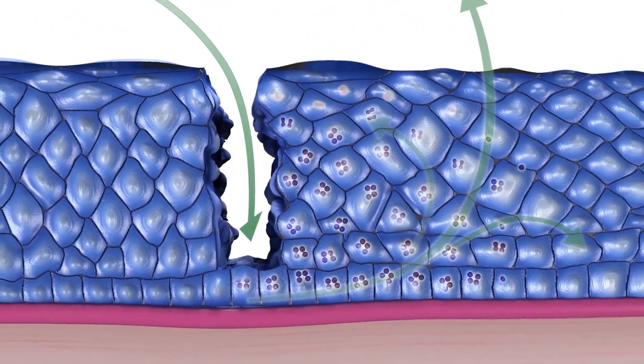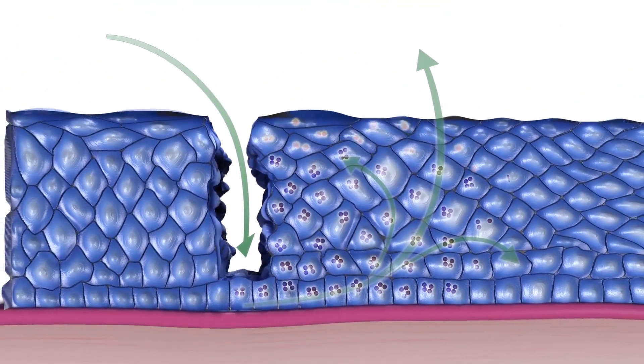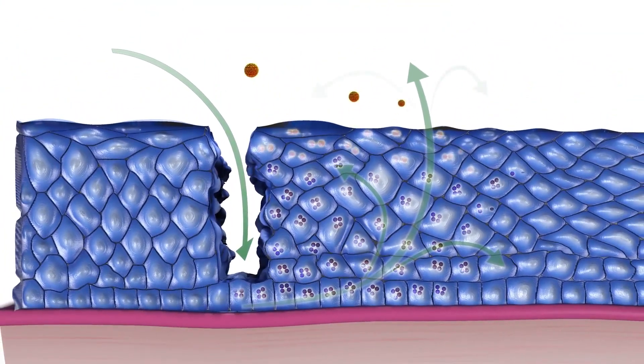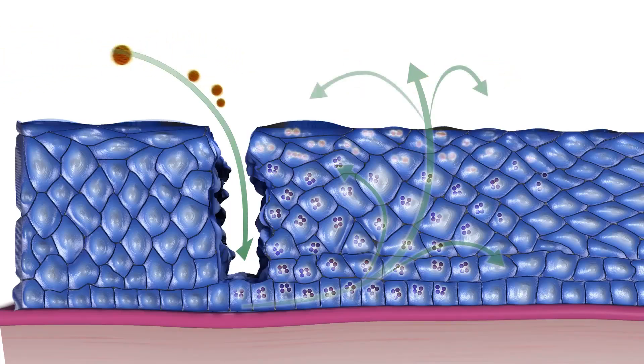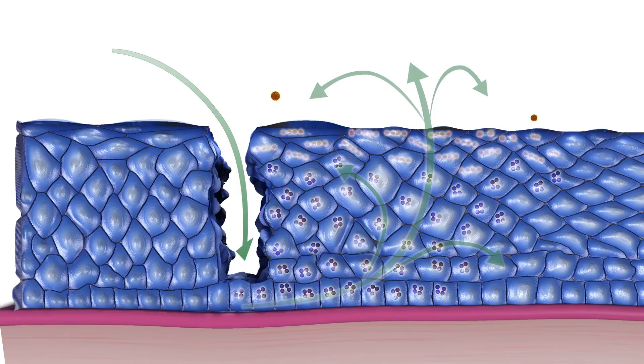The dividing basal cells begin to differentiate, and viral genome amplification and synthesis of the capsid proteins L1 and L2 occur in the upper layers of the epithelium.